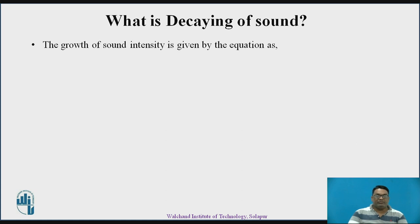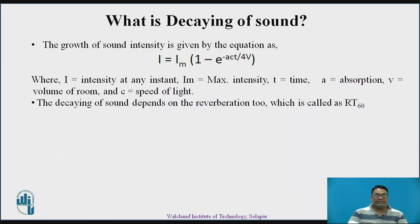The growth of sound intensity is given by the equation: I = I_m (1 − e^(−act / 4V)), where I is the intensity at any instant, I_m is the maximum intensity, t is the time period, A is the absorption, V is the volume of the room, and C is the speed of sound.